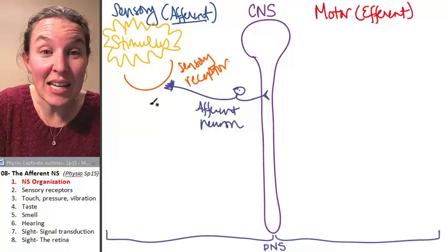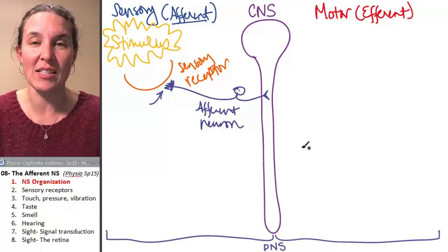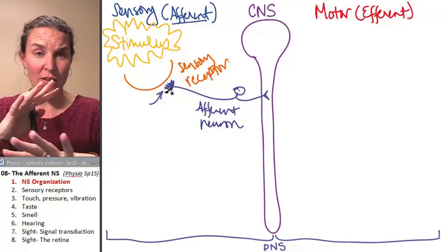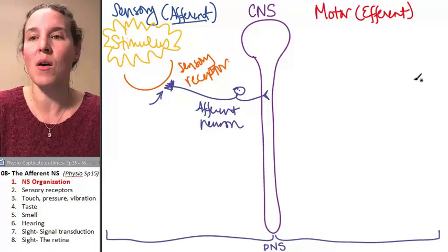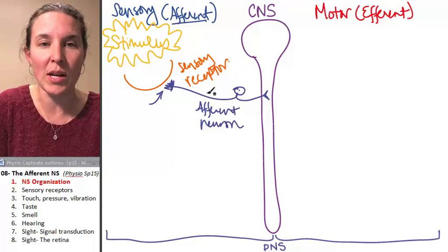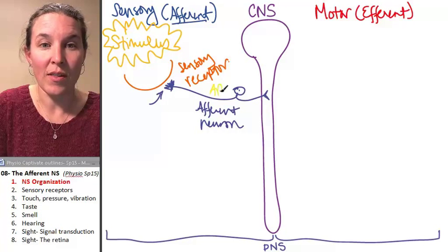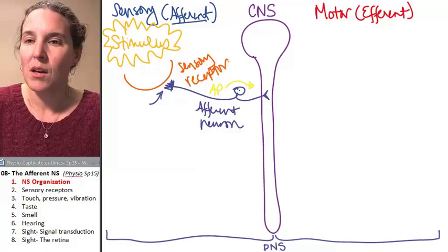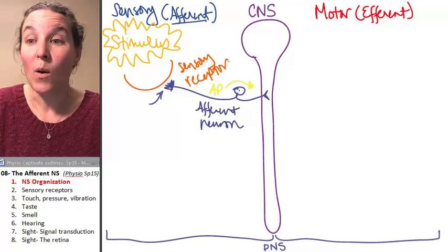Here's the amazing thing. Sometimes these little dendrites actually are the sensory receptor. Other times the sensory receptor is a whole other thing. Regardless, somehow the information gets translated into an action potential. That says action potential even though you can't see it at all. All right, I'll change the color of my action potential.